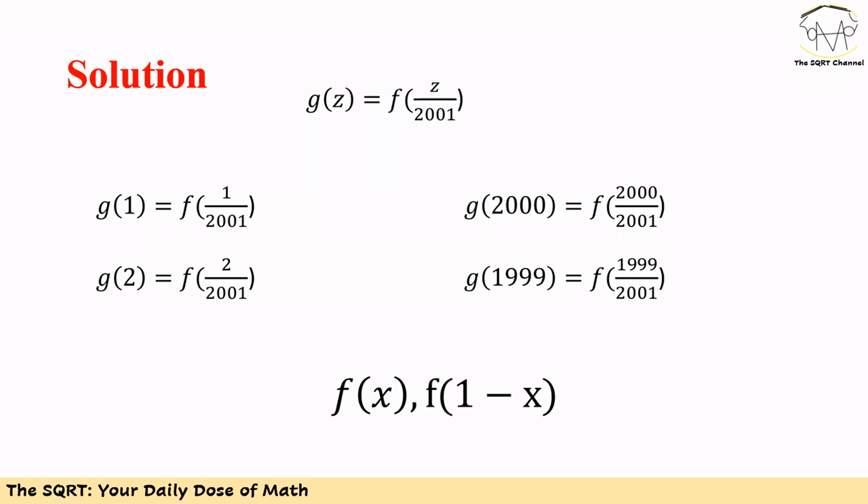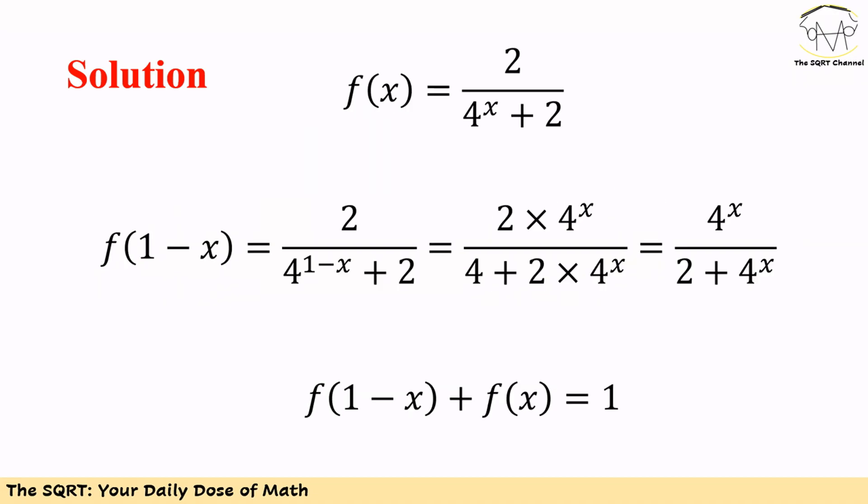That's very interesting. Let's calculate f of 1 minus x in general. We know f of x is equal to 2 over 4 to the power of x plus 2. So f of 1 minus x is 2 over 4 to the power of 1 minus x plus 2. If we multiply both numerator and denominator by 4 to the power of x, we get 2 times 4 to the power of x in the numerator and 4 plus 2 times 4 to the power of x in the denominator. Removing the factor of 2 from top and bottom gives 4 to the power of x over 2 plus 4 to the power of x.